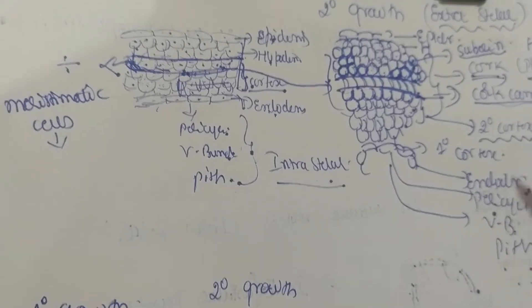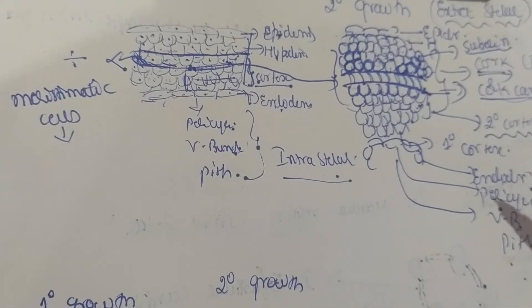Now let us list the changes in secondary growth compared to primary growth. In primary growth we had: outermost epidermis, inner to epidermis is hypodermis, inner to hypodermis is cortex, inner to cortex is endodermis, inner to endodermis is pericycle, inner to pericycle is cambium, and inner to cambium we have primary xylem and phloem, with pith at the center.